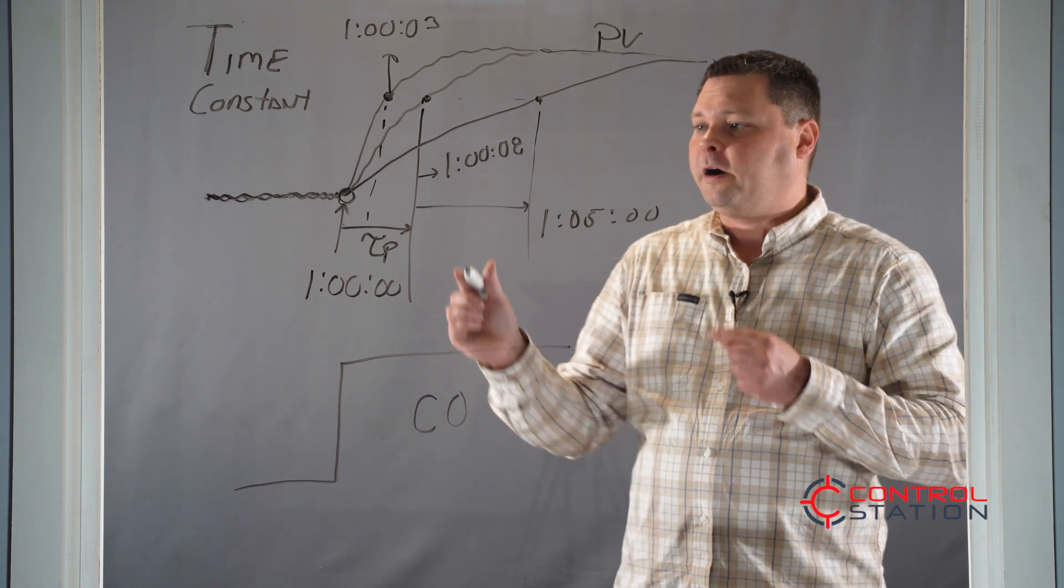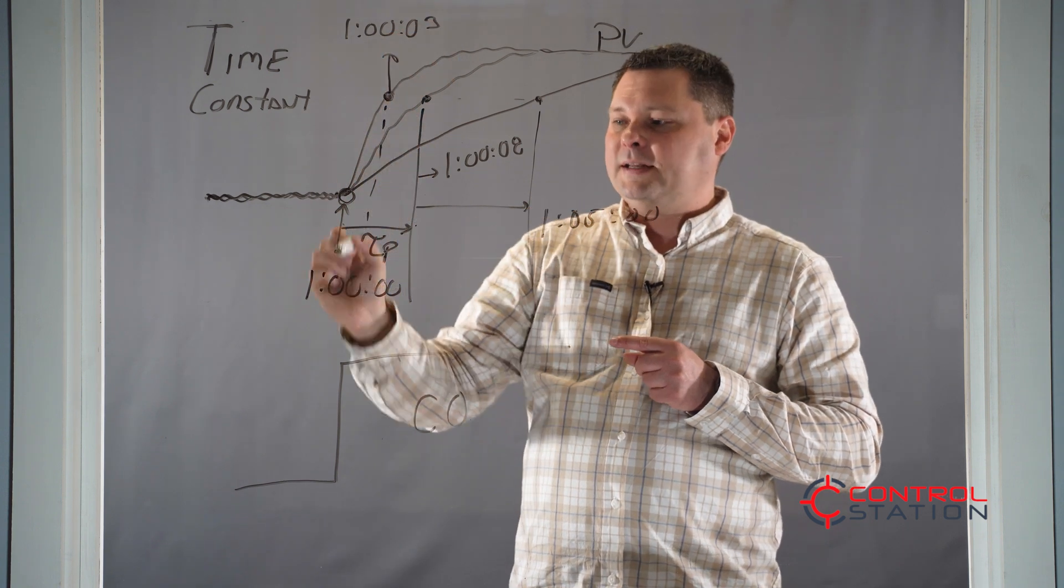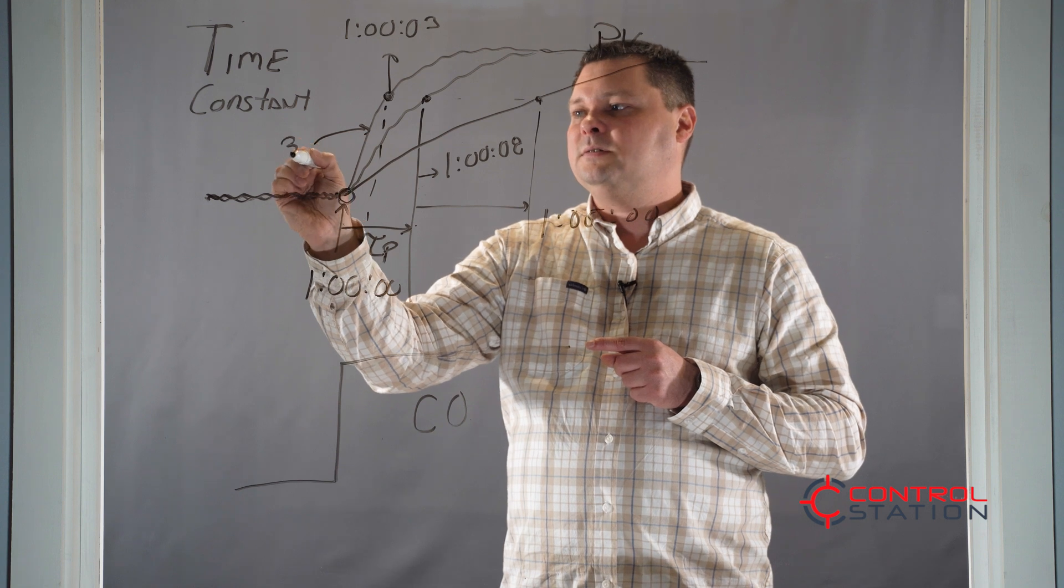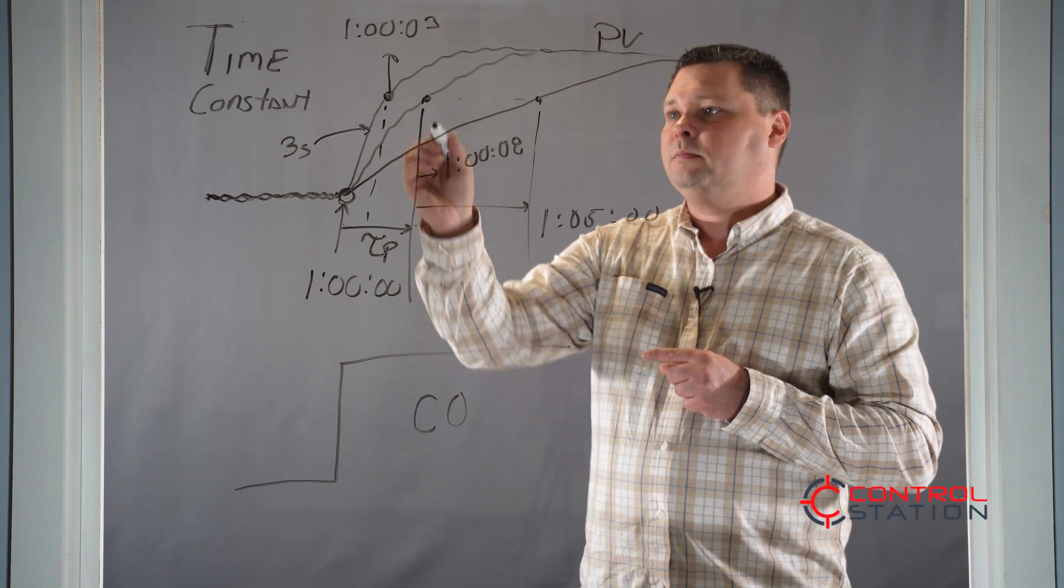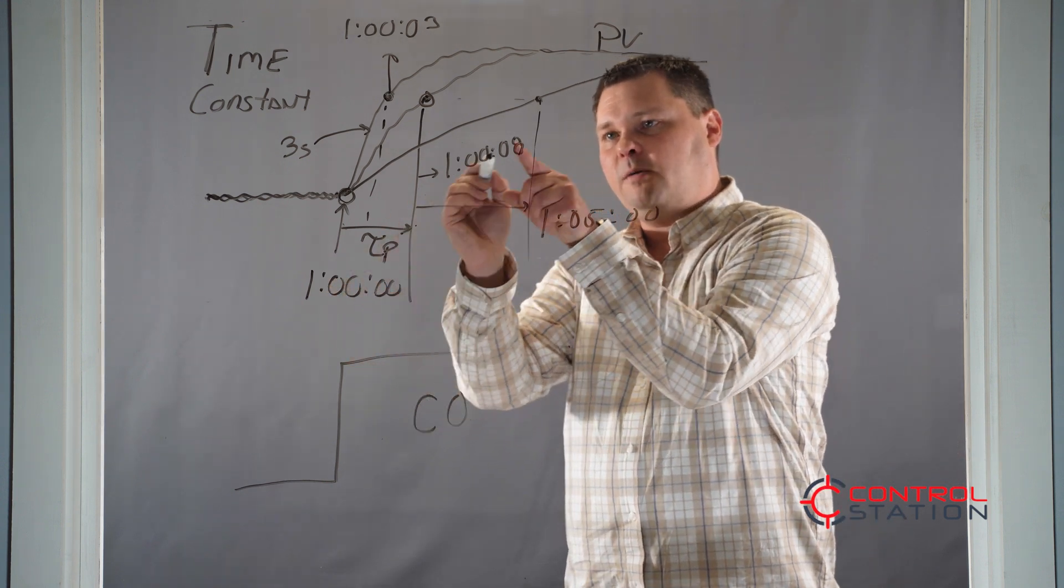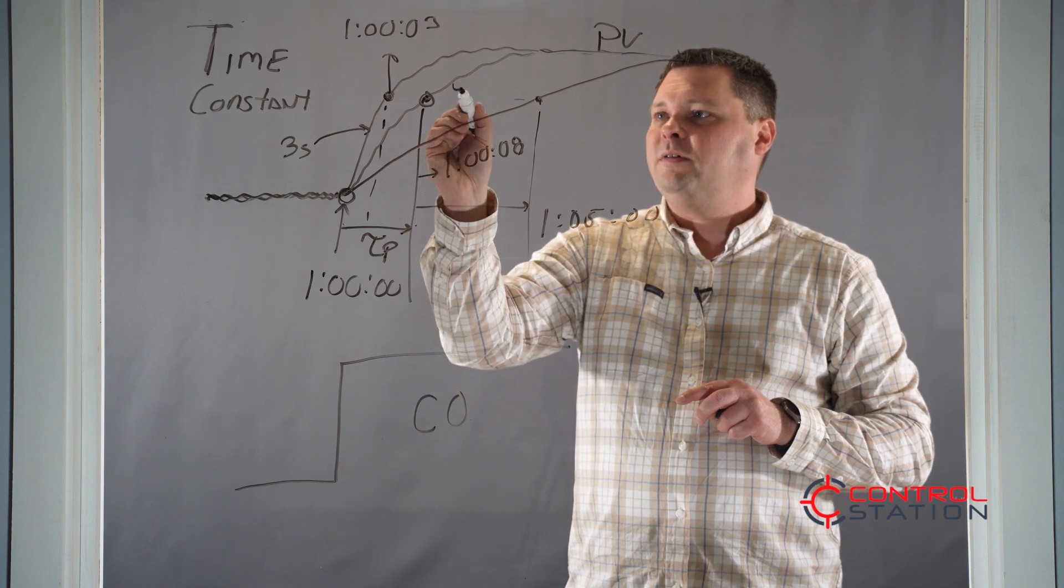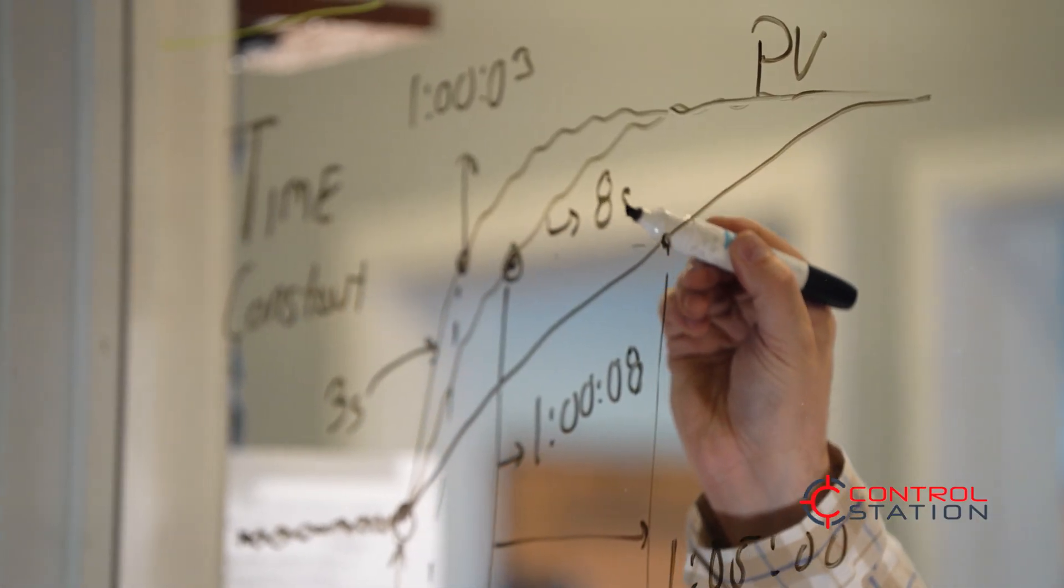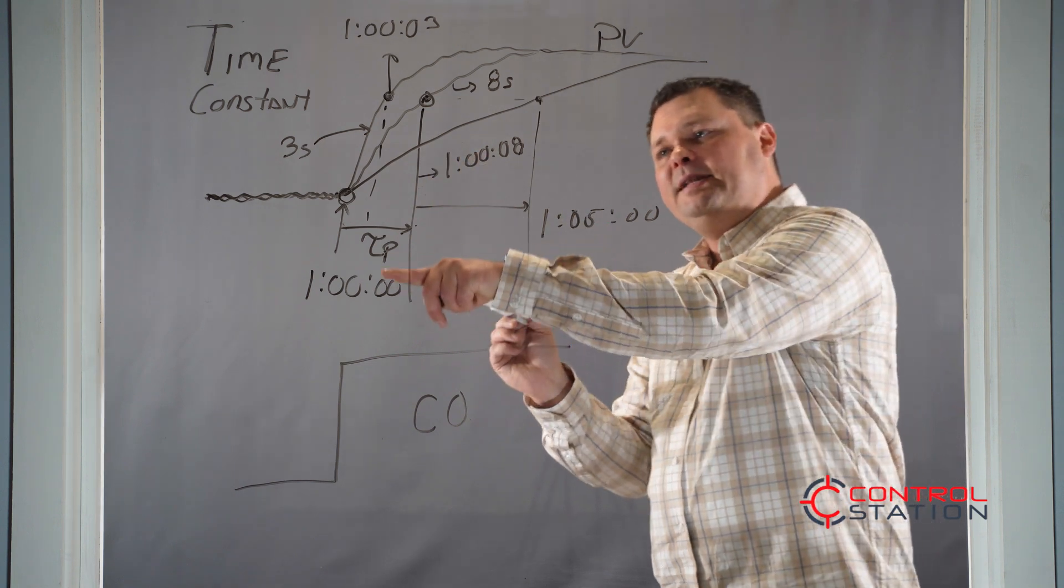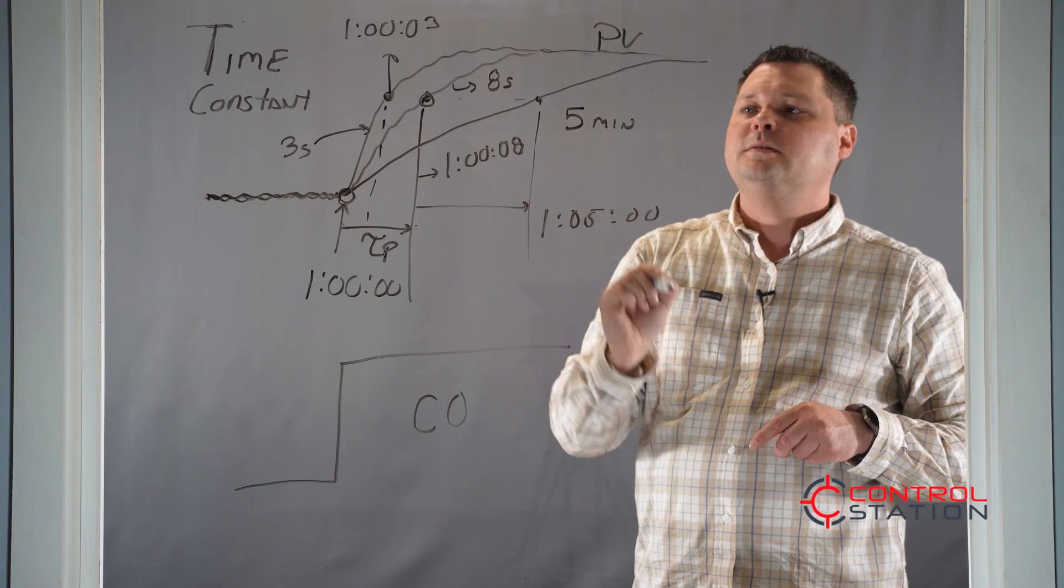So our time constant would be the difference. So the fastest loop, this was three seconds after this, so our time constant would be three seconds for this example. For this example, it took eight seconds to get there. So if this was zero, this was eight seconds, this would mean that your process time constant for this one is eight seconds. What about this very slow one? Well, it took five minutes to get there, so your time constant would be five minutes.